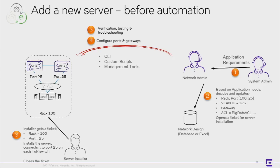If there's a mistake, the network admin might find out the next day and have to go correct issues in the data center physically. Once the server installer closes the ticket, the network admin uses existing tools and scripts — CLI, common scripts, or management tools — to configure the ports, and then potentially needs to test those configurations. There's a lot of manual process, room for errors, and multiple hands involved.